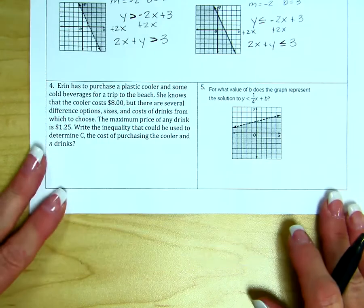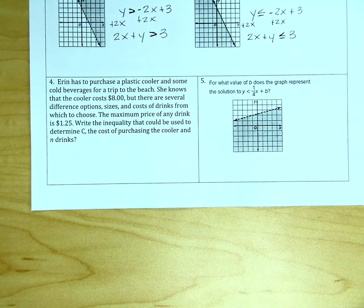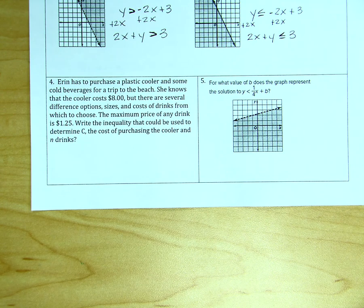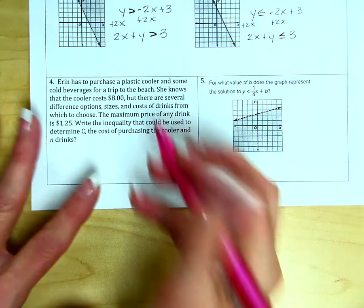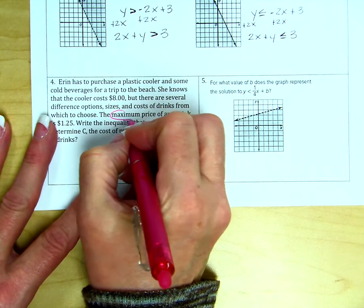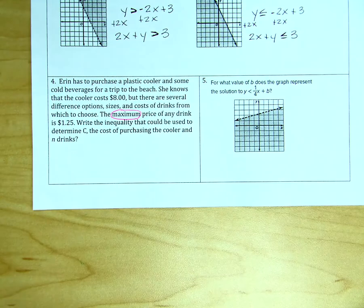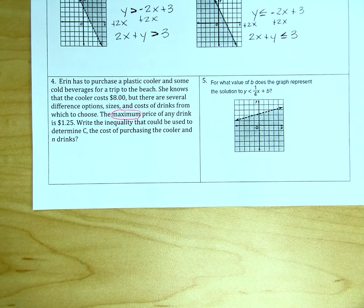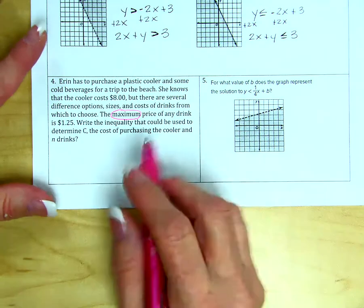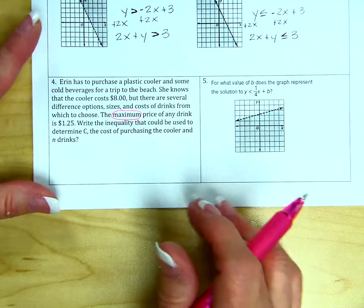For number 4, Erin has to purchase a plastic cooler and some cold beverages for a trip to the beach. She knows the cooler costs $8. But there are several different options and sizes and costs of drinks from which to choose. The maximum price of any drink is $1.25. Write the inequality that could be used to determine C, the cost of purchasing the cooler and n drinks.